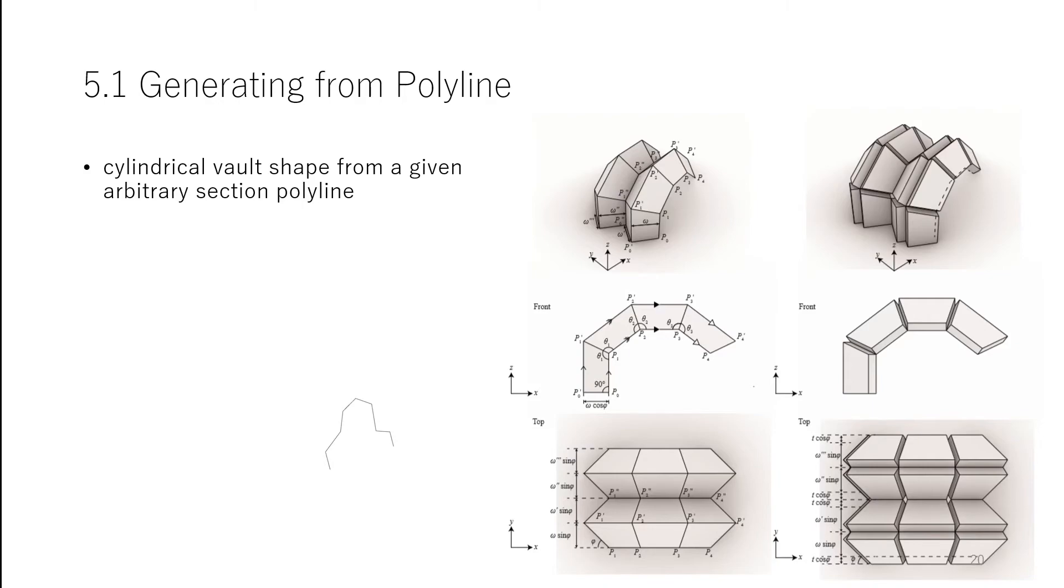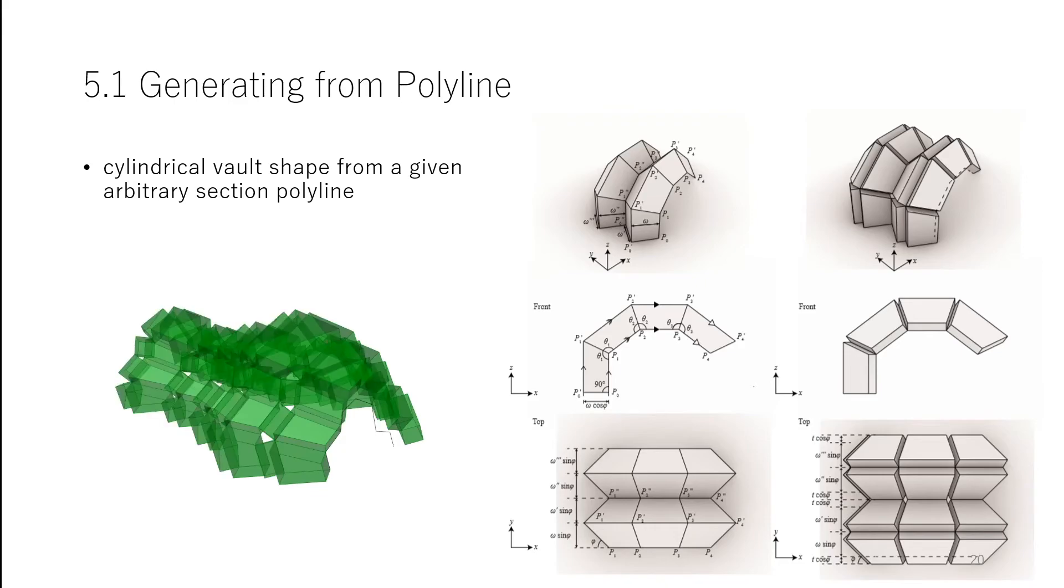We demonstrate a simple design approach to create a cylindrical bar-like shape from a given arbitrary section polyline. The procedure to generate is as follows. Create an offset polyline by a constant width outward and moving it. Extrude and move the panels at a concave point to avoid self-intersection. You can connect these mechanisms like this.